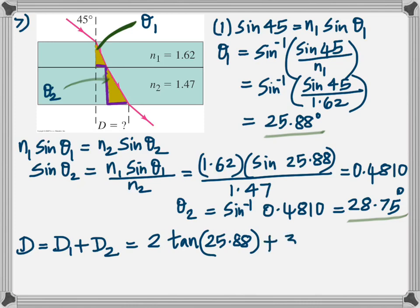So in a similar fashion find theta 2. Once you've got both of that, you can take the total distance as and call them d1 and d2, those are the two bases. And d1 would be 2 times tangent 25.88 and d2 would be 3 times, because those are the heights, 3 times tan 28.75, which gives 2.6 cm.